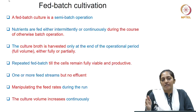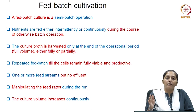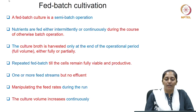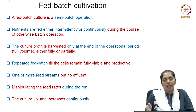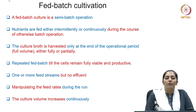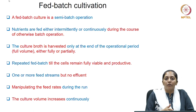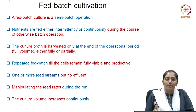The culture broth is harvested only at the end of the operation. The end of the operation is once the volume reaches the maximum volume possible in a reactor, which is nearly kept around 80 percent of the total volume of the reactor. This is because in a fed batch mode of cultivation there is only an inlet stream and no outlet stream, so the volume will keep rising and hence we cannot continue the fermentation.